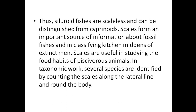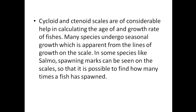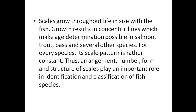By counting the number of fish scales along the lateral line and around the body, you can identify fish species. Cycloid and ctenoid scales have growth rings or growth lines that help calculate the age and growth rate of fish. Many species undergo seasonal growth, which is marked in the lines on the scale. In species like salmon, spawning marks can also be seen on the scales, revealing how many times the fish has spawned.